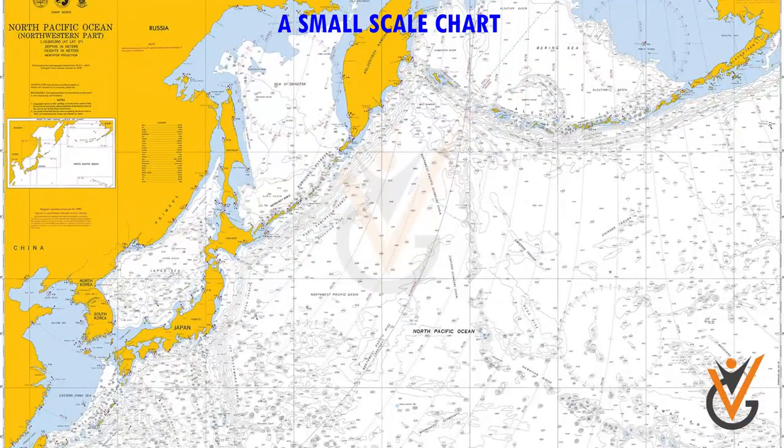A small scale chart covers a vast area of the earth's surface, providing little detail about the area it represents. This chart is not suitable for safe navigation but is used primarily by navigators for route planning. An ocean chart is an example of a small scale chart.